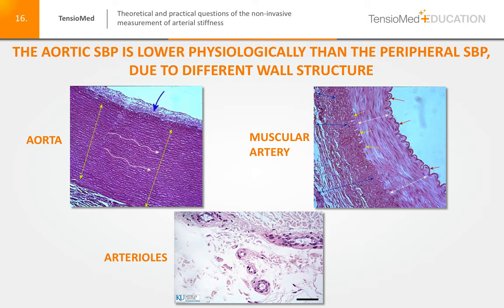What about the arterioles? The lumen-to-smooth-muscle ratio is the lowest at the arteriole level. These are the smallest arteries that still contain a muscular layer. If we administer a vasopressor agent to a patient, causing vasoconstriction, the strongest effect is seen at the arteriole level, because the very strong smooth muscle contraction produces a very marked diameter reduction. This produces the highest resistance increase, which is why we call the arterioles resistance arterioles.